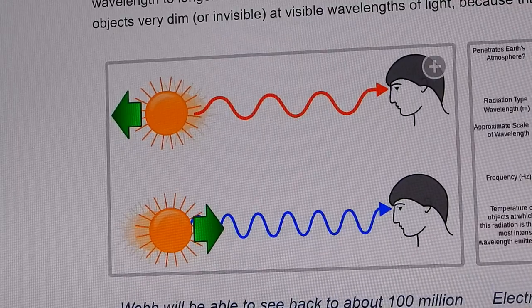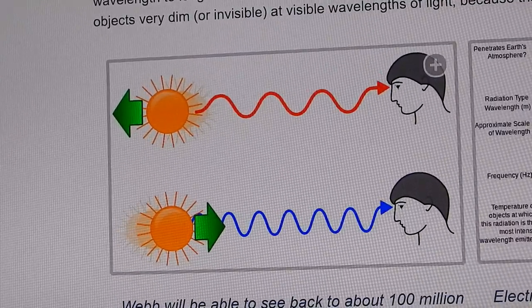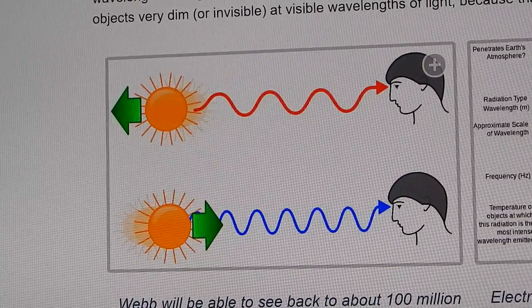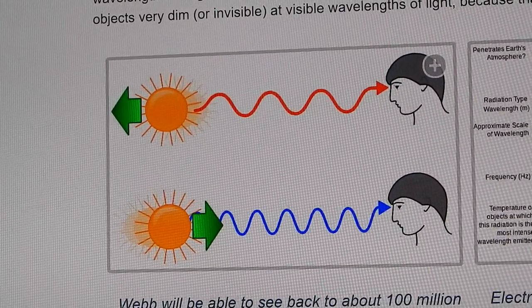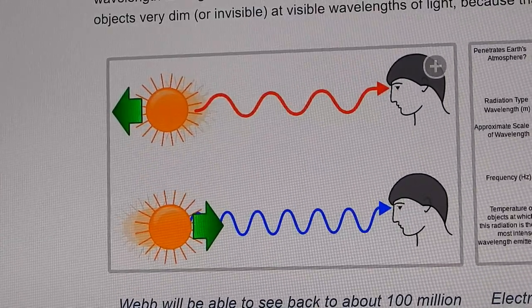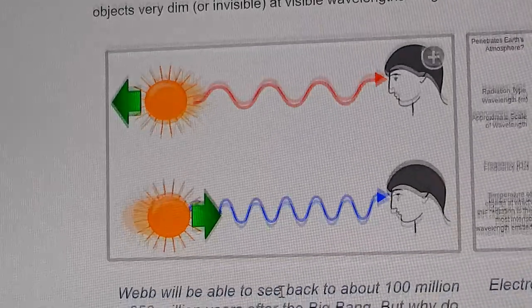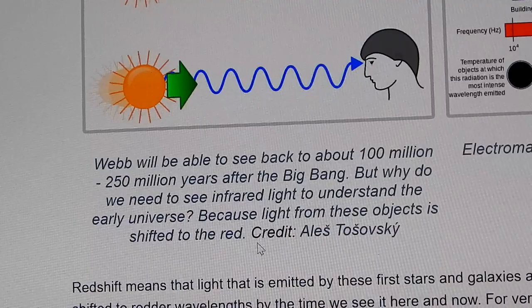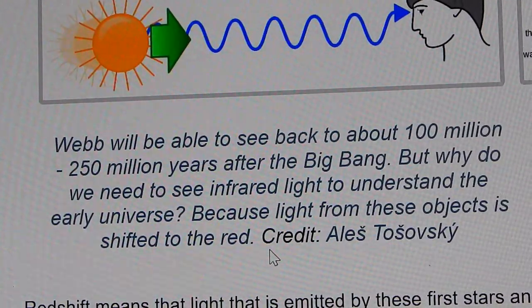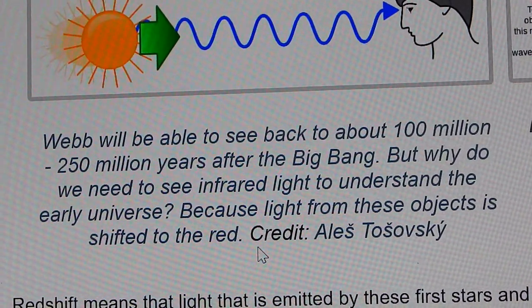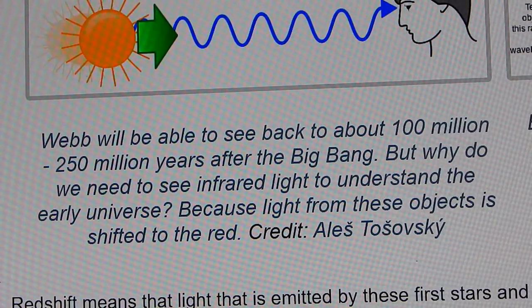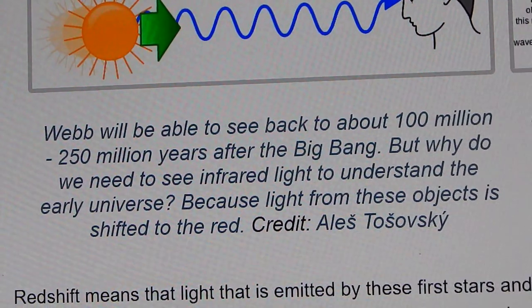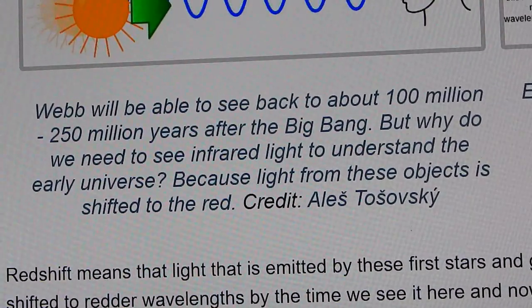And it says visible wavelengths of light, it shifts because the light reaches us as infrared light. So this little diagram here shows basically what happens with Doppler and why light does that. So visible light, as it's moving away from us, the waves, and the faster it moves, this occurs even more, the waves get spread out. The frequency drops. As light or an object is approaching you, the waves get compressed, and the frequency goes up. Very slight amount, but that's how Doppler works. And it also says here that the web will be able to see back to about 100 million to 250 million years after the Big Bang. But why do we need to see in the infrared light to understand the early universe? Because the light from these objects is shifted into the red.